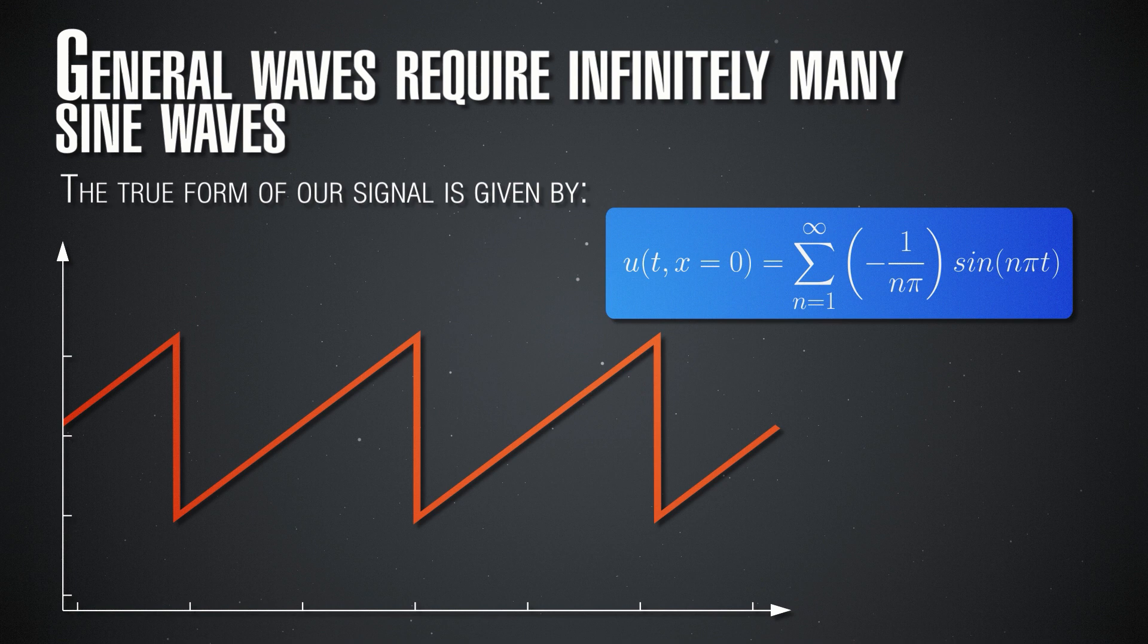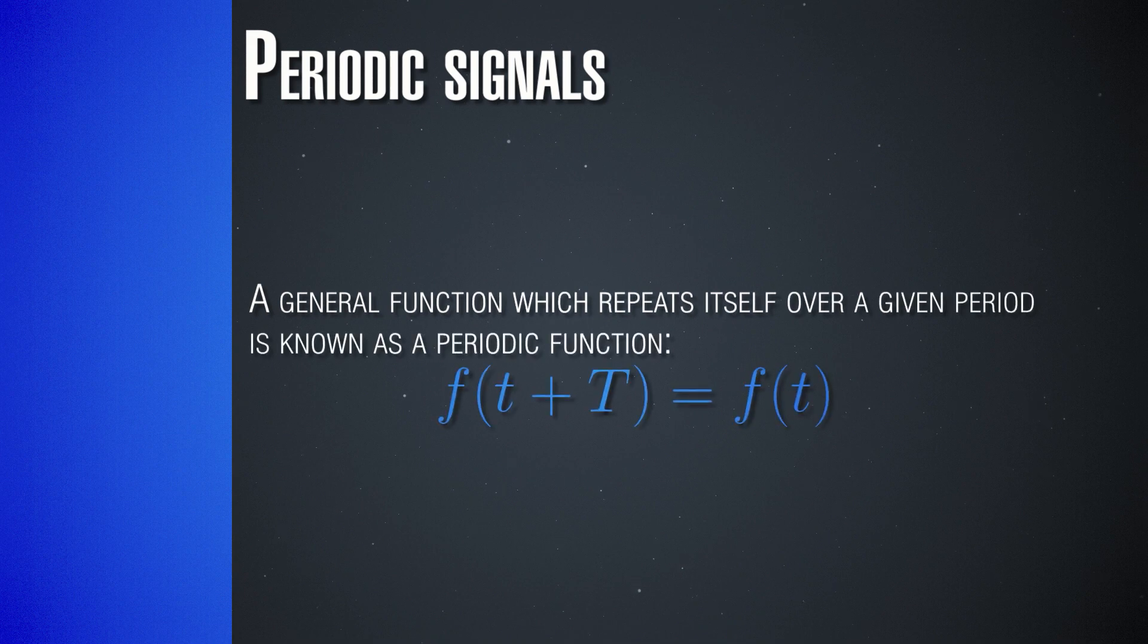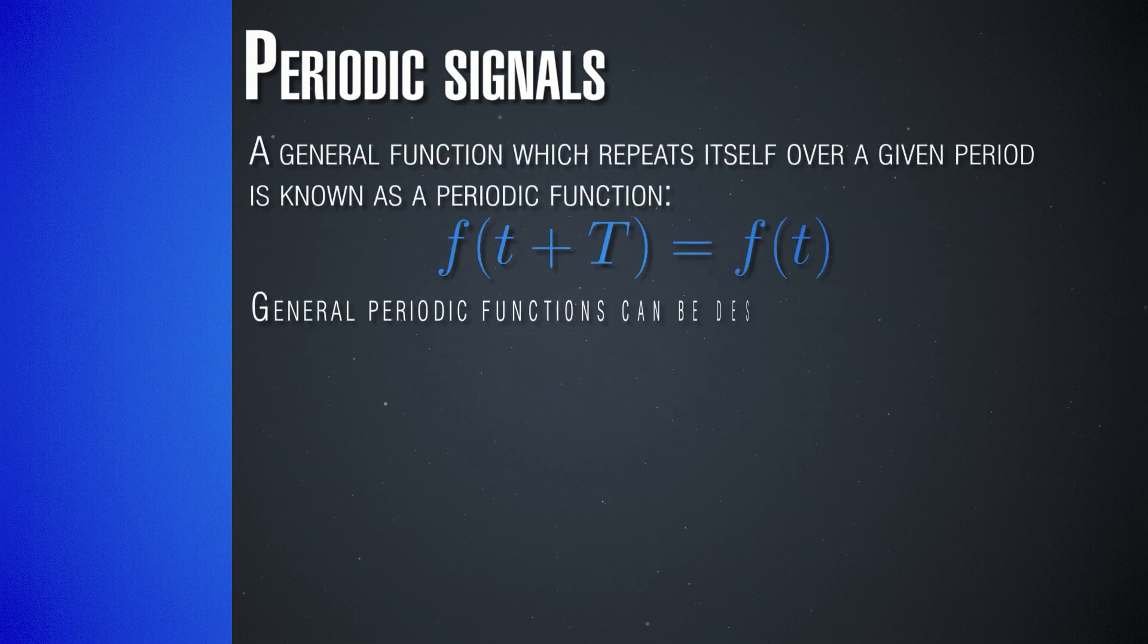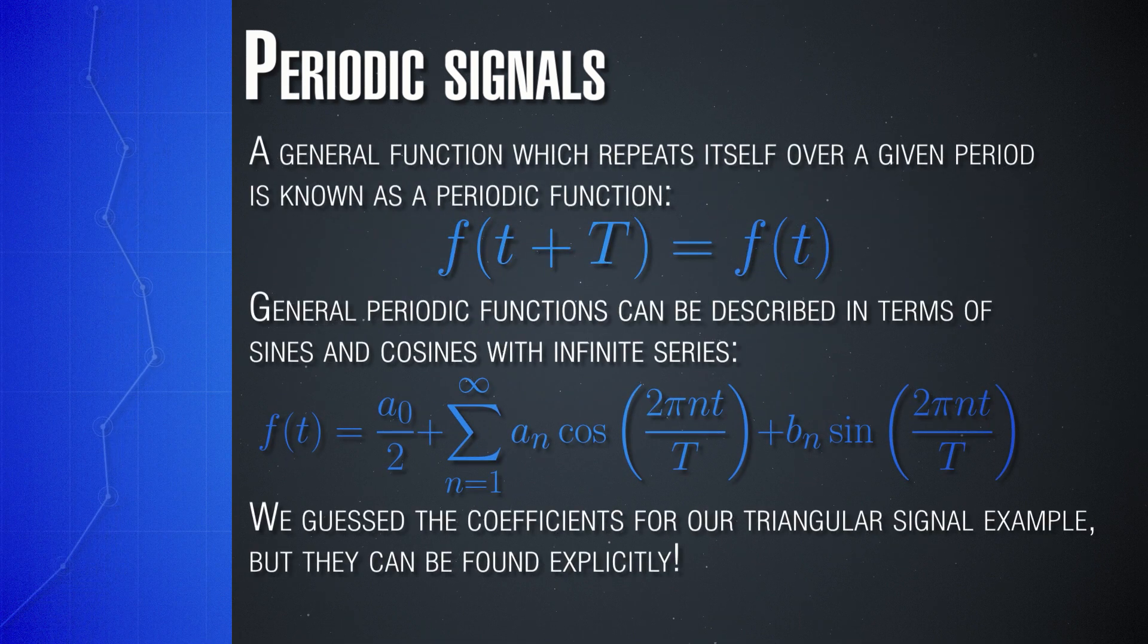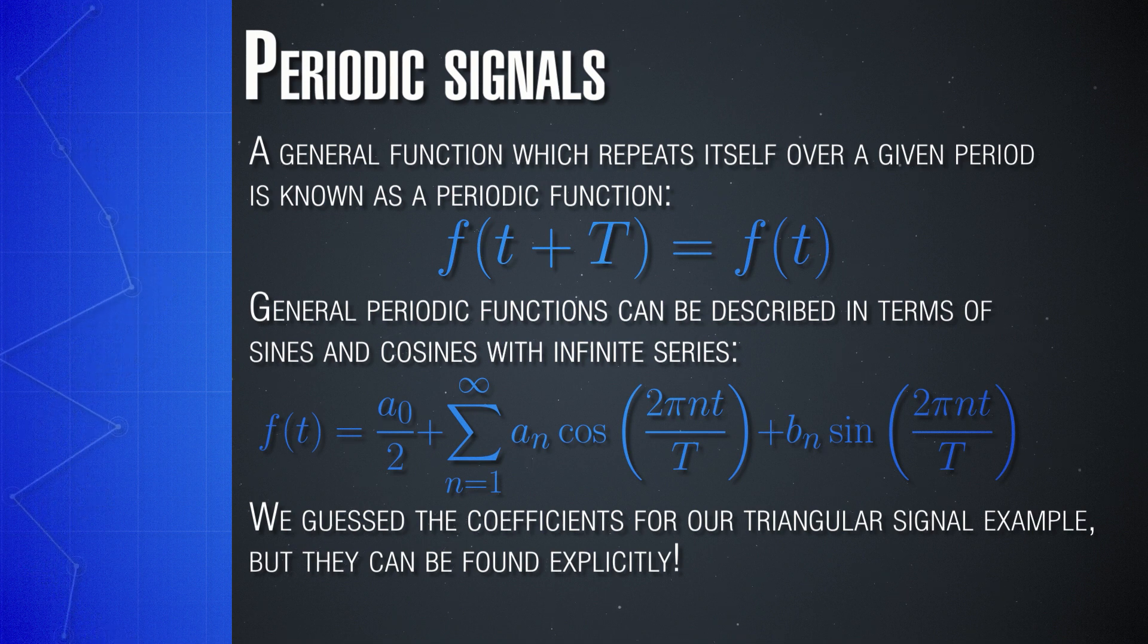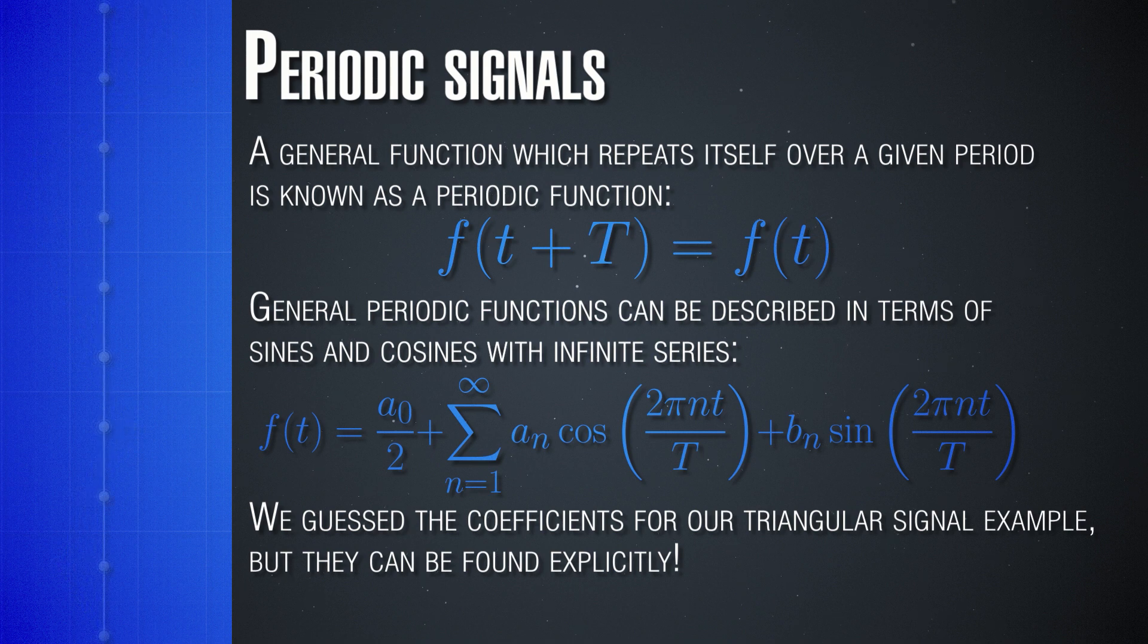And so, the general lesson that we learn and the general statement which we can give right now is that a general periodic function, which has a period of T, can always be given, can always be created as a combination of sine and cosine functions. It is a superposition of a constant term plus an infinite sum of sine functions and an infinite sum of cosine functions, but all of them have a specific relation in their angular frequencies. And so you can see that the nth angular frequency is actually 2π over T multiplied by this n which is always an integer.